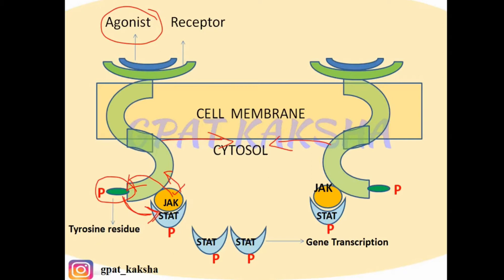After phosphorylating these free-moving STAT proteins in the cytoplasm, the phosphorylated STAT proteins get detached from the receptors and form pairs. Then the pair of phosphorylated STAT proteins go to the nucleus and lead to transcription of the gene. Gene transcription means protein formation related to that particular gene, and due to this protein formation, various biological responses are governed.